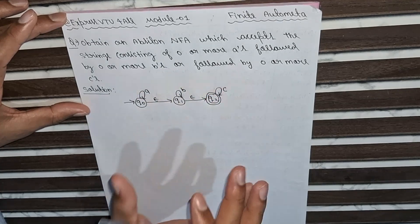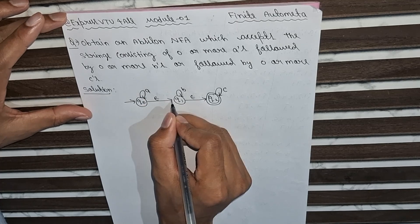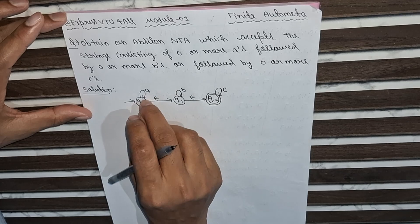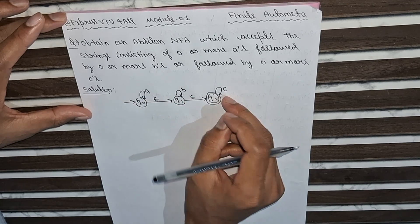So here, if there is 0, epsilon-epsilon, and then the final state, all will be 0. And if there will be a, b, and c - a followed by b followed by c - like this we can do epsilon NFA diagram.